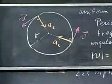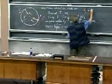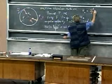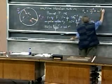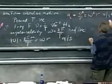And the centripetal acceleration, the magnitude, is v squared divided by r, which is therefore also omega squared r, and that is in meters per second squared.